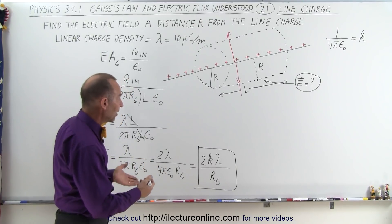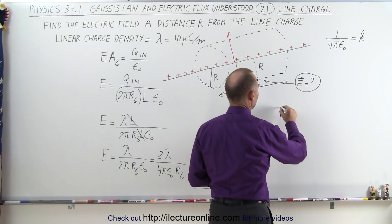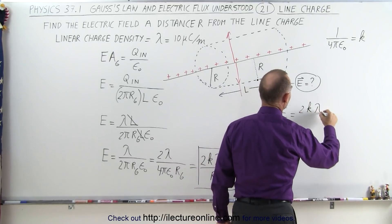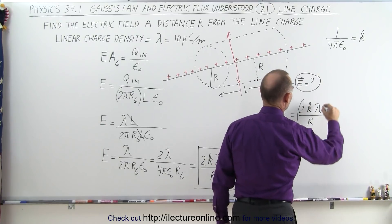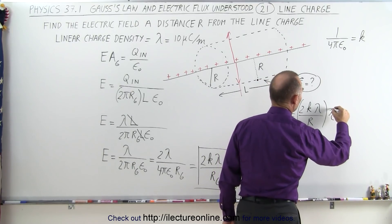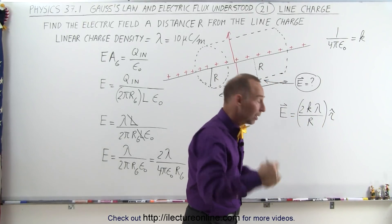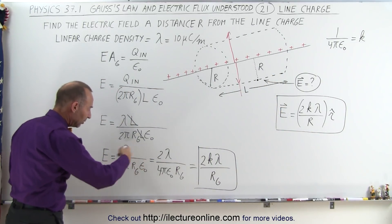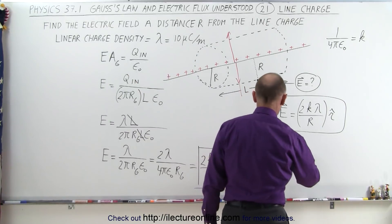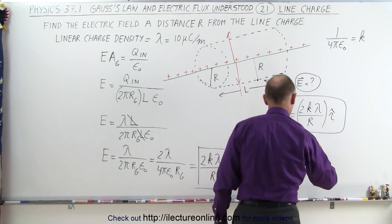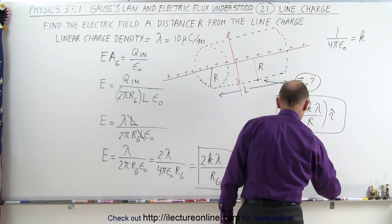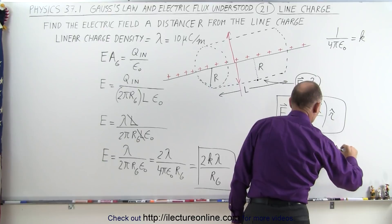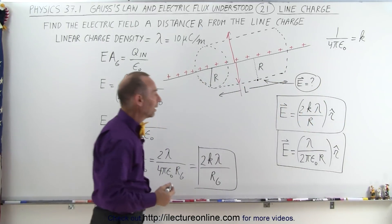If you want to write this as a vector quantity, the electric field equals 2k·lambda divided by r, multiplied by the radial unit vector r-hat, pointing away from the line charge. Alternatively, you can write it as lambda divided by 2π·epsilon sub nought times r, multiplied by the radial unit vector. Those are the two equivalent ways to write the answer.